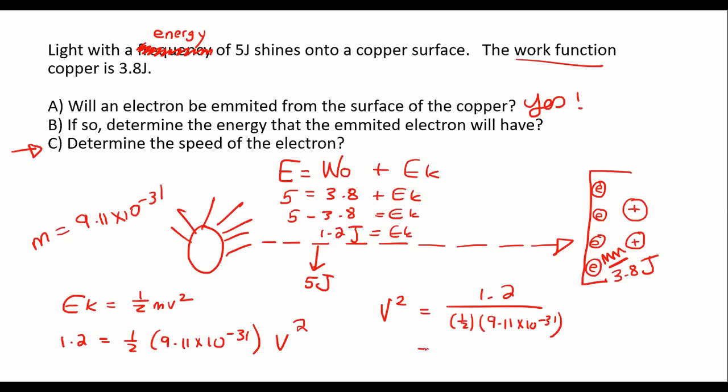That gives us 2.634 times 10 to the power of 30. To get the velocity by itself, take the square root. The final answer will be 1.62 times 10 to the 15 meters per second. We'll see you next time.